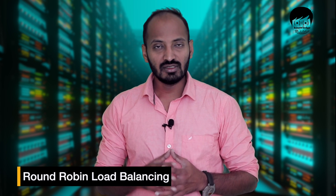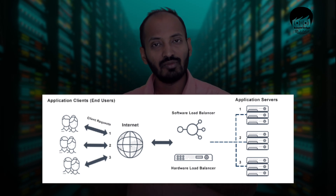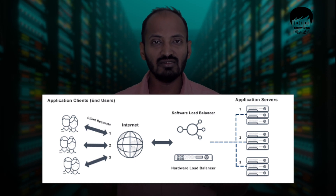In the round robin algorithm, suppose there are three servers and users are trying to reach a website like google.com. The first request is sent to Server A, the second request goes to Server B, and the third request goes to Server C. When the fourth request comes, it again goes to Server A, then Server B, then Server C — continuously repeating in that cycle. This sequential, repeating assignment is known as round robin load balancing.